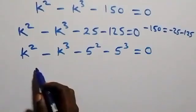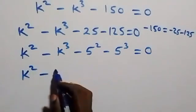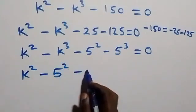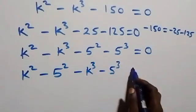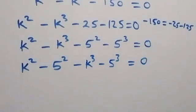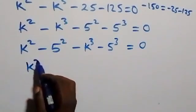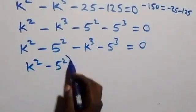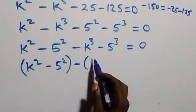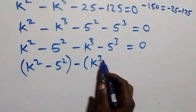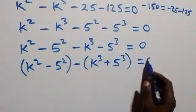Now let's bring the squares together and the cubes together. We group k squared minus 5 squared together, then factor minus out from the cubes, giving us k squared minus 5 squared, minus bracket k cubed plus 5 cubed, close bracket, equals zero.